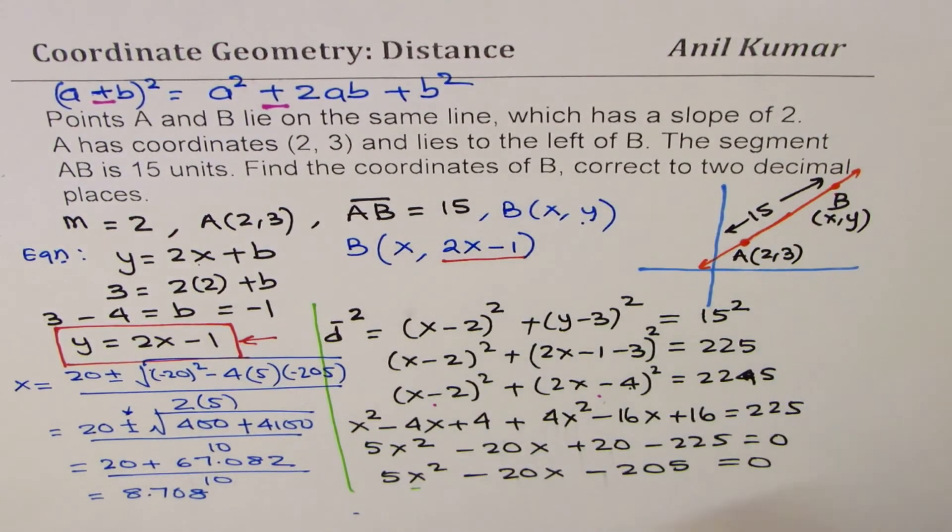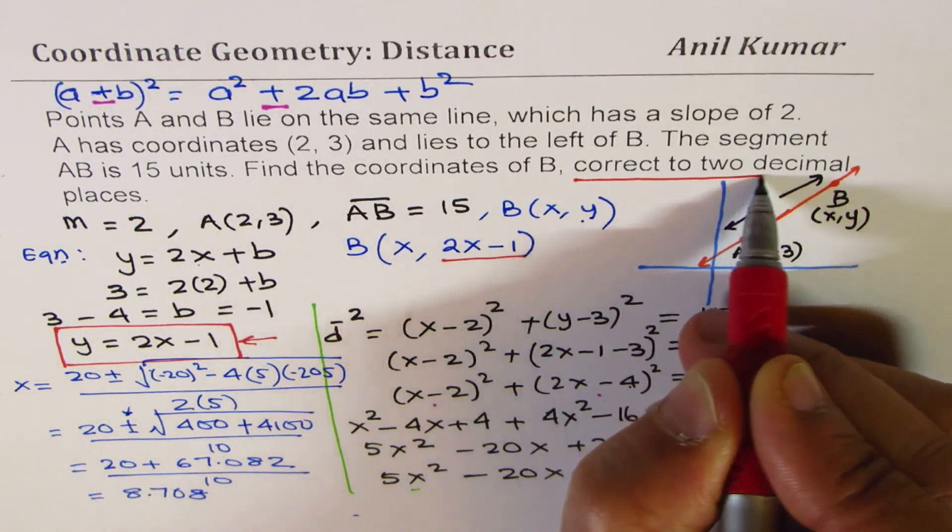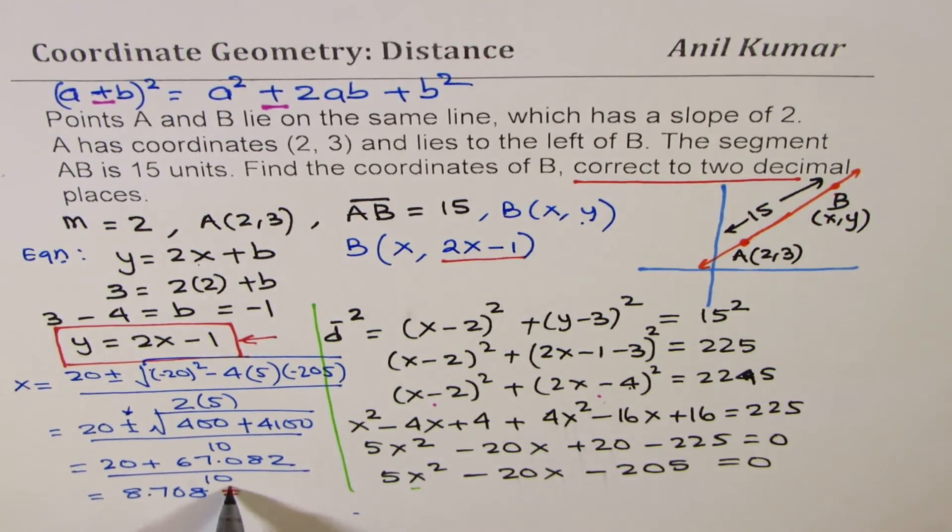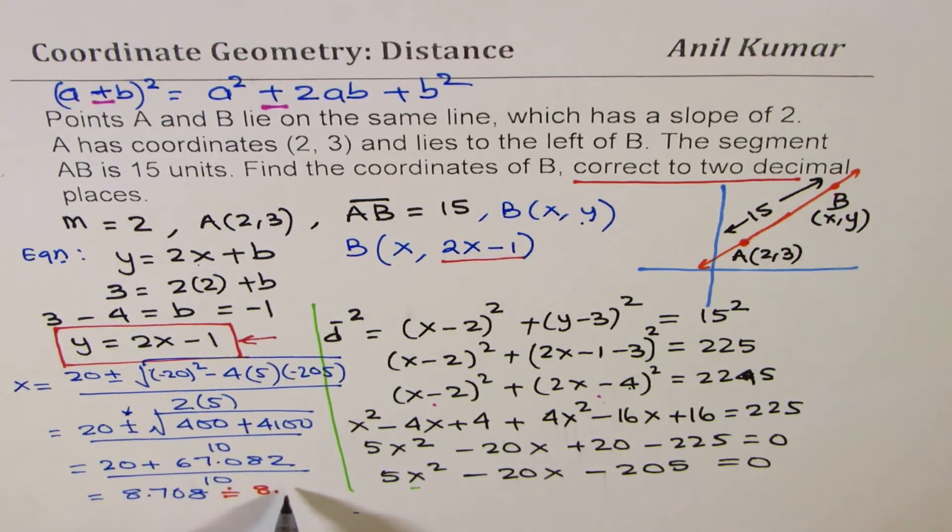Now, we need to find answer correct to two decimal places. That means, we'll round this, right? So, this will be equal to 8.71. So, that is the x value.